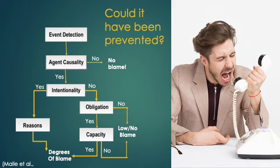If they did have the capacity to fulfill their obligation, and even though they didn't mean to they caused a norm violation, in this model people are likely to still ascribe some degree of blame.